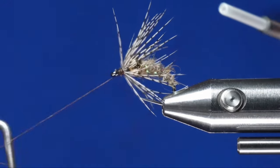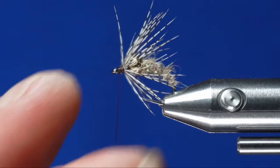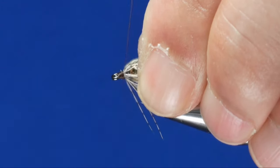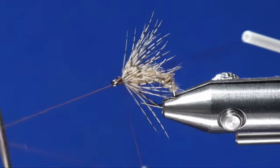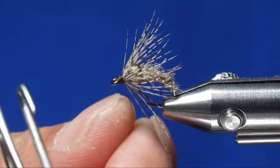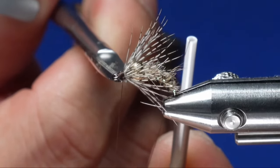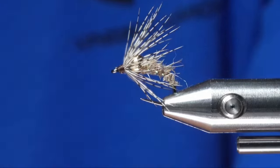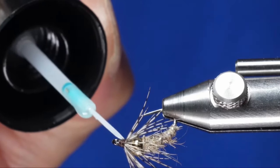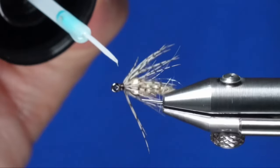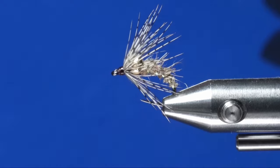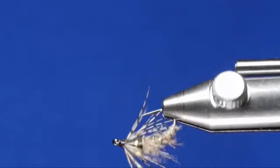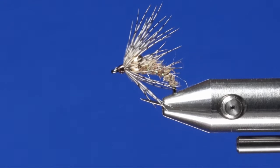And then I like to add a drop of Solarez bone dry on the head to make that whip finish a little bit more durable. Just zap it with your light. And there you have it, finished fly. Pretty easy to tie, super effective. Tie a few up, let us know how you do. Thanks for watching.